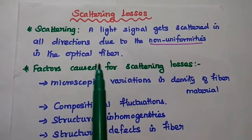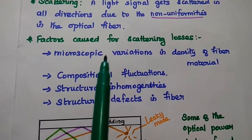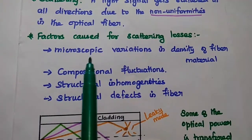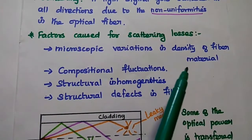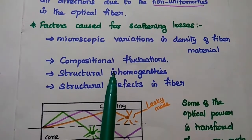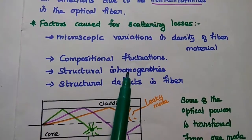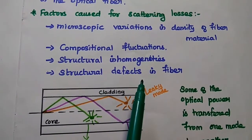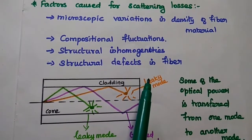The major factors causing scattering losses are: microscopic variations in the density of fiber material, compositional fluctuations, structural inhomogeneities, and structural defects in the fiber during the manufacturing process.